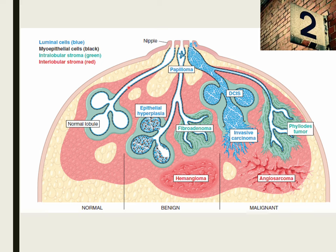The breast has two types of stroma. The first is the interlobular stroma, highlighted in red, which surrounds the large ducts and the terminal duct lobular unit. It is composed of mature adipose tissue — forming the majority of breast volume — as well as fibroconnective tissue including fibroblasts, myofibroblasts, blood vessels, lymphatics, and nerves. The second type is the intralobular stroma, highlighted in green, which surrounds the terminal duct lobular unit. So the breast has two types of epithelial cells, two types of stroma, and two main structures.